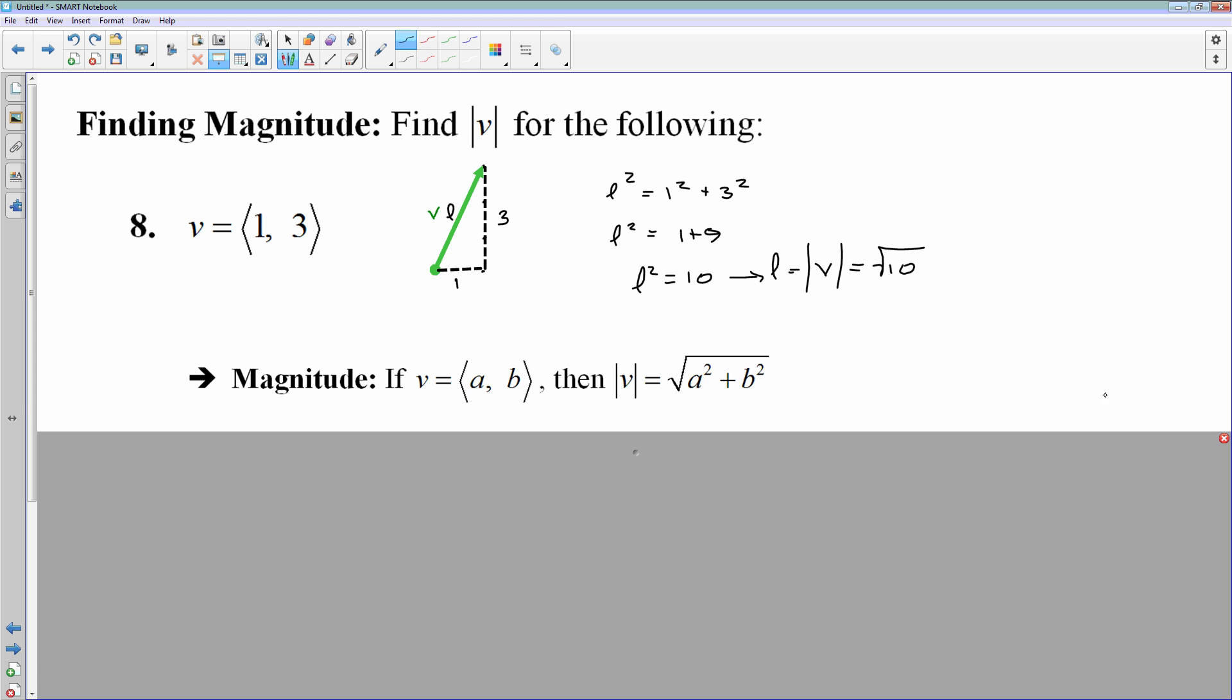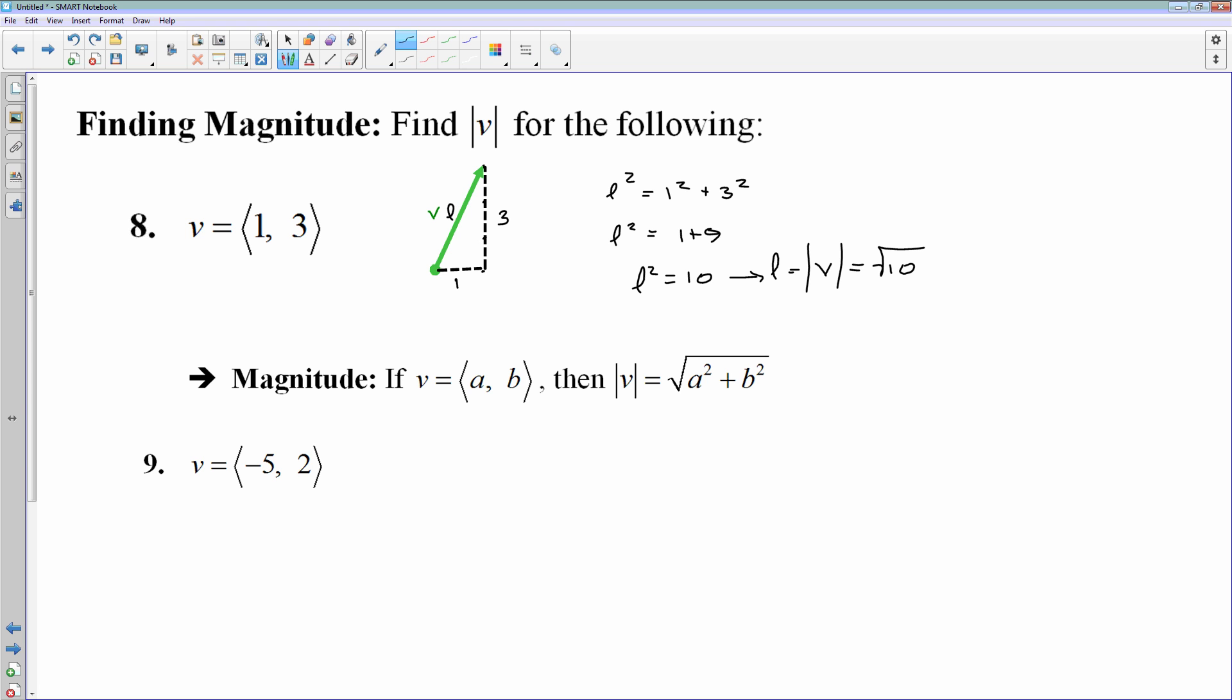So if that's how we're going to find the magnitude, let's find the magnitude of this vector, v. This is my a. This is my b. For number 9, if I want to find the length of vector v, I will simply do the square root of negative 5 squared plus 2 squared. Negative 5 squared is 25. 2 squared is 4. 25 plus 4 is 29. And that would be the magnitude of vector v.